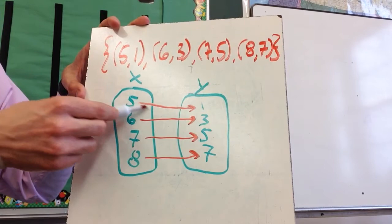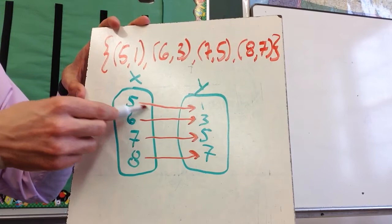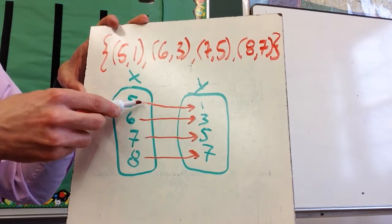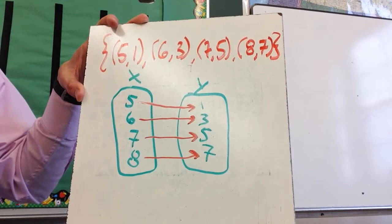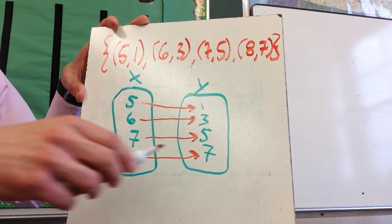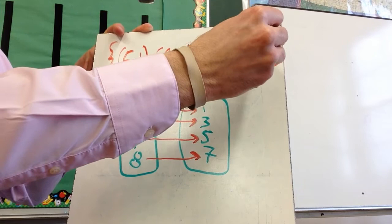If there were two arrows coming out of this 5, so for example, where you would see it where it's not a function, then this would not be a function because there would be two arrows coming out of the 5. However, and this is where a lot of people get confused, two arrows can come into a y. For example, if I were to change this so that this was a 5, not the best looking 5, then this would go away.